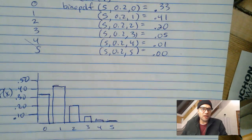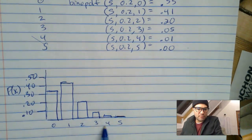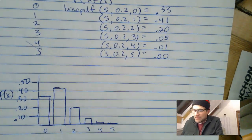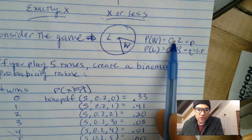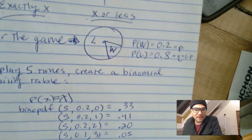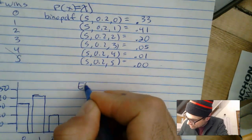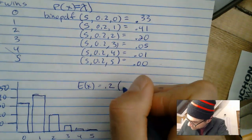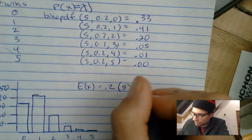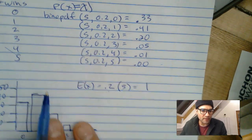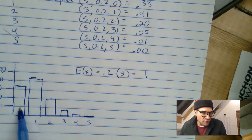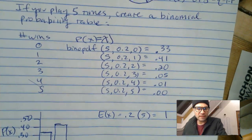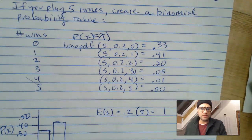You may be asked on the AP test to draw and sketch the probability distribution. This is what a binomial distribution looks like — it's skewed to the right. Your expected winning is 0.2 times the number of games, which is five, so you're expected to win exactly once. Notice most of the time you do win once, and then zero and two are next, further away. That's your expected winnings.